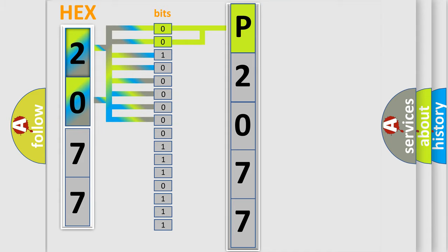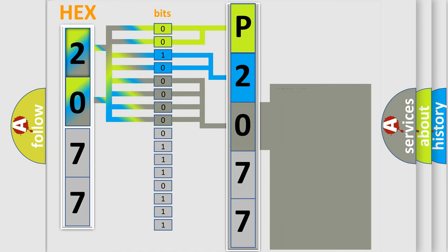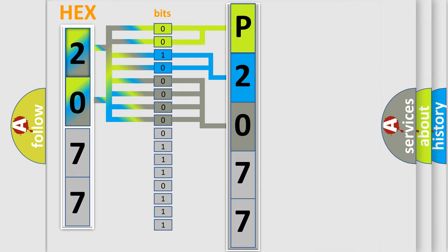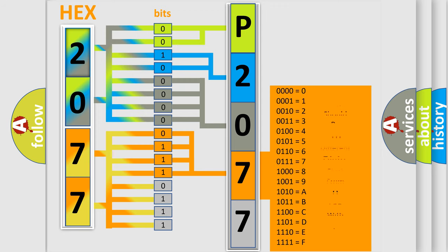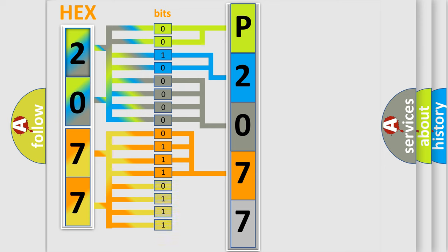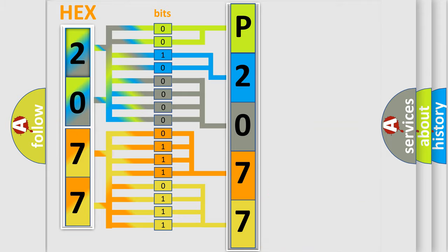The next two bits determine the second character. The last four bits of the first byte define the third character of the code. The second byte is composed of a combination of eight bits. The first four bits determine the fourth character of the code, and the combination of the last four bits defines the fifth character. A single byte conceals 256 possible combinations.